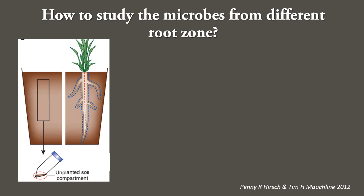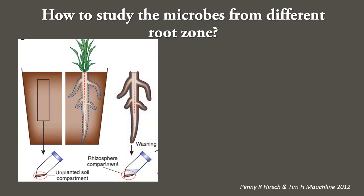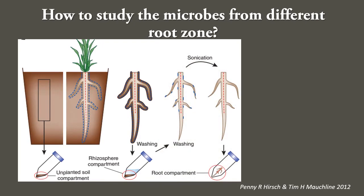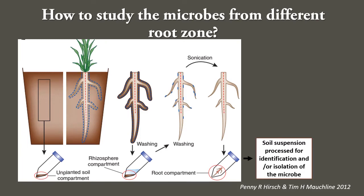To study the microbes from different root zones: first, collect the bulk soil from an unplanted region. Second, harvest the plant root and collect the rhizosphere soil by normal washing. Third, for separating rhizoplane microbes, the roots are vigorously washed by sonication, which will also release the endophytic microbes. All this soil suspension is then processed for identification and isolation of microbes.